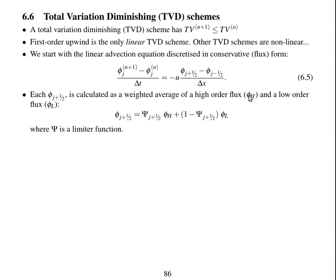For a TVD scheme, we're going to calculate each phi at j+1/2 as a weighted average of a higher order flux φ_H and a lower order flux φ_L.